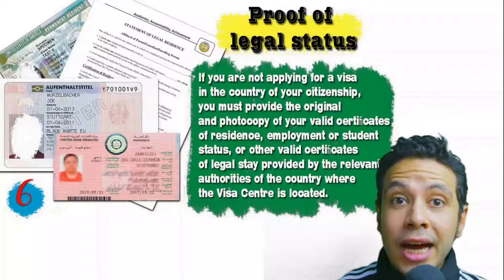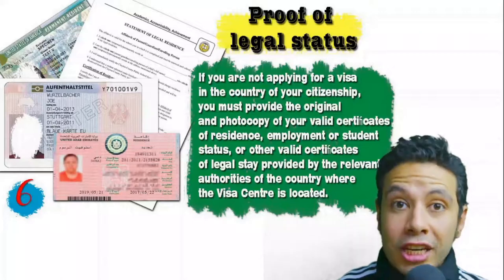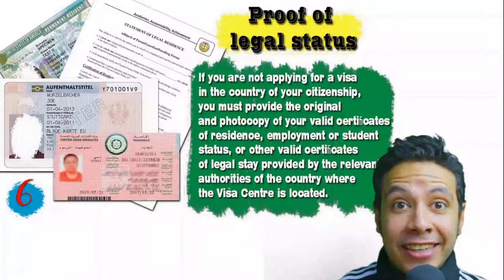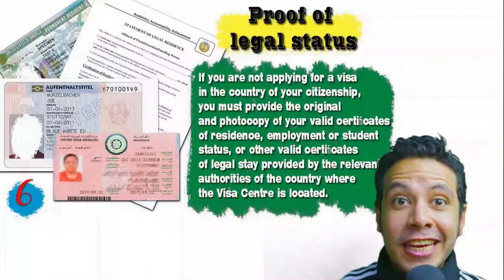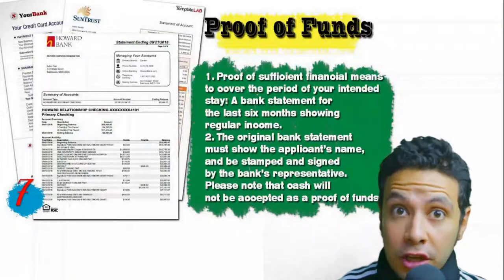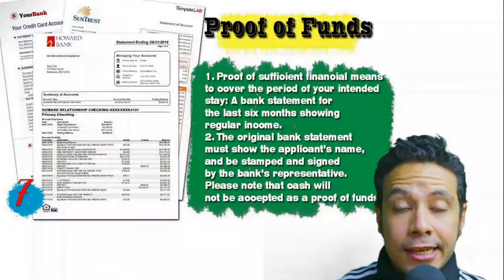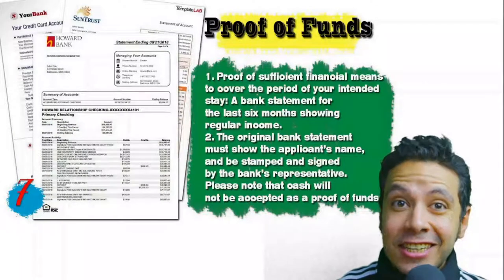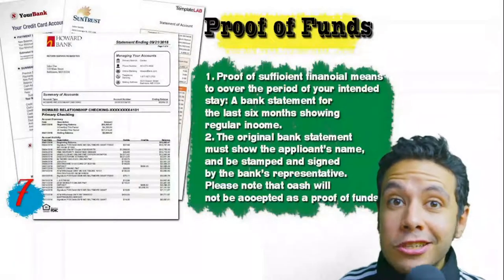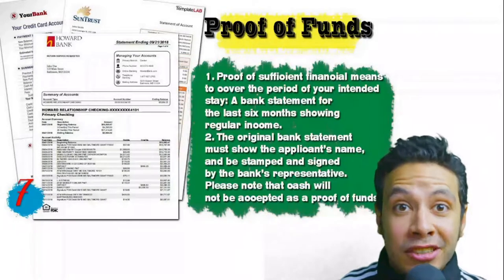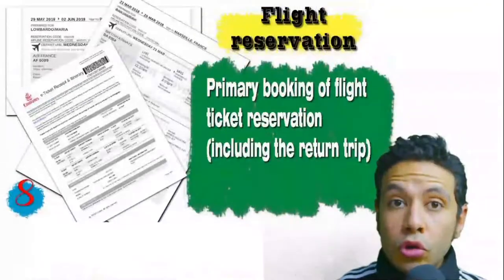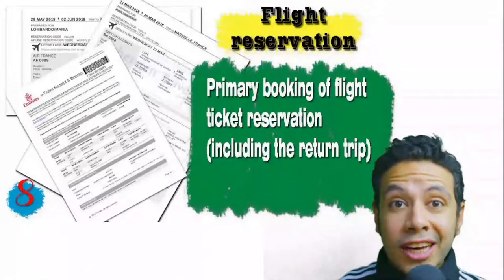If you are a student, an enrollment letter should be provided from your university or school. If you are applying from a country different from your own, you will need a proof of legal status — a certificate of legal residence — and sometimes a valid residence visa for that country is also accepted. You will also need proof of sufficient funds: a bank statement showing your balance for at least six months, signed and stamped by bank representatives. Cash will not be accepted as proof of funds.